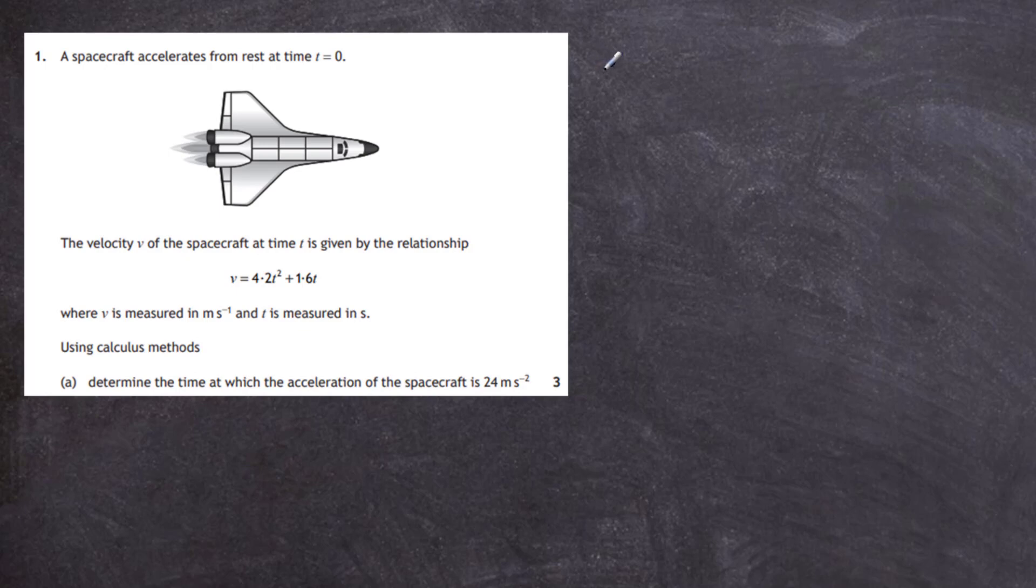Now we know that the acceleration of any object is equal to the rate of change of its velocity, dv by dt, and we know what the function of v is. It's equal to d by dt of 4.2t squared plus 1.6t.